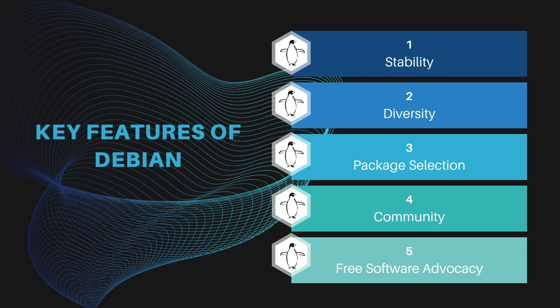Diversity: Debian boasts support for a wide range of hardware architectures, accommodating everything from 64-bit architecture to cutting-edge ARM devices. Package selection: with a vast repository of software packages, Debian caters to virtually every imaginable need, from server applications to desktop utilities and multimedia tools.